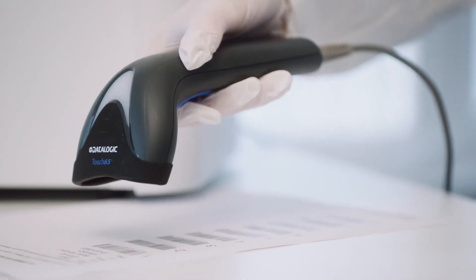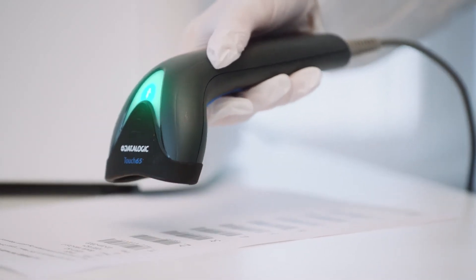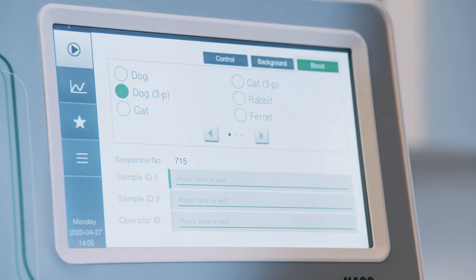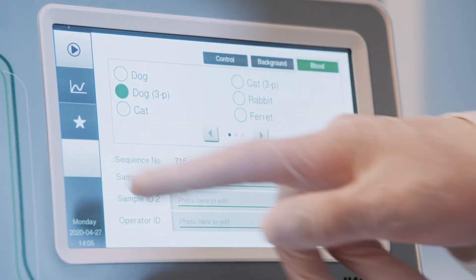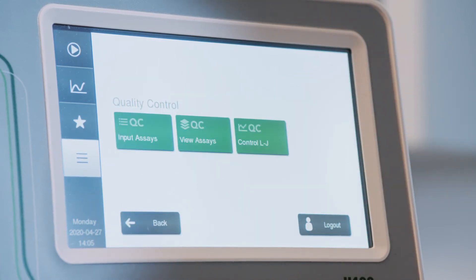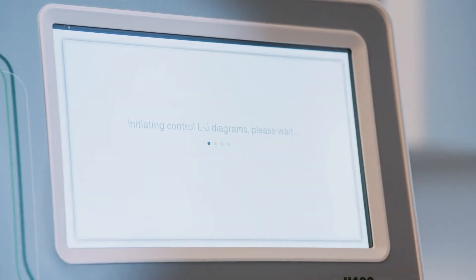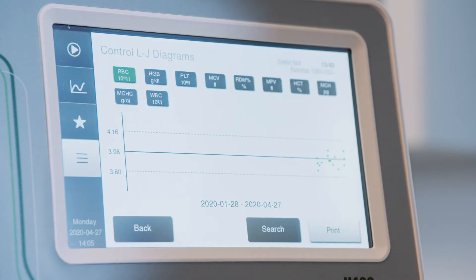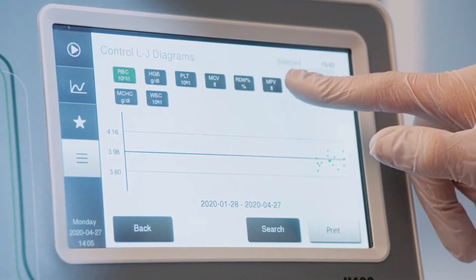In addition, a complete quality control program is on board every Exego H400 analyzer. Entering control information via the barcode scanner takes just a minute, after which QC data is on hand whenever you need it, along with Levey-Jennings diagrams to monitor the stability of the controls and instrument.